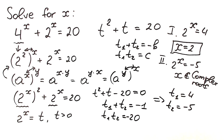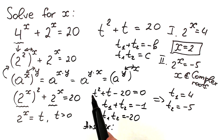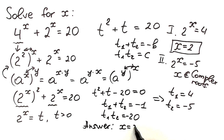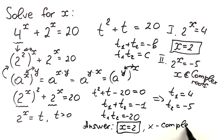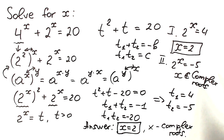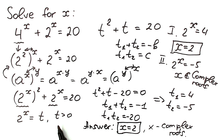So our answer: x equals 2 is the real root. By inspection it's easy to spot, but this is the proper solution. We also have complex roots from 2 to the power x equals minus 5. This is the explanation for this challenge — I hope you learned something new. If you got it wrong, don't feel bad. If this video was helpful, don't forget to like and subscribe.